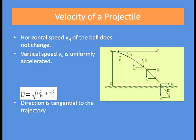The horizontal speed Vh remains constant because there is no component of force in the horizontal direction. The vertical speed Vv is uniformly accelerated, as there is gravitational force and acceleration due to gravity in the vertical direction. Hence, the final velocity of the projectile V equals the square root of (Vh² + Vv²).